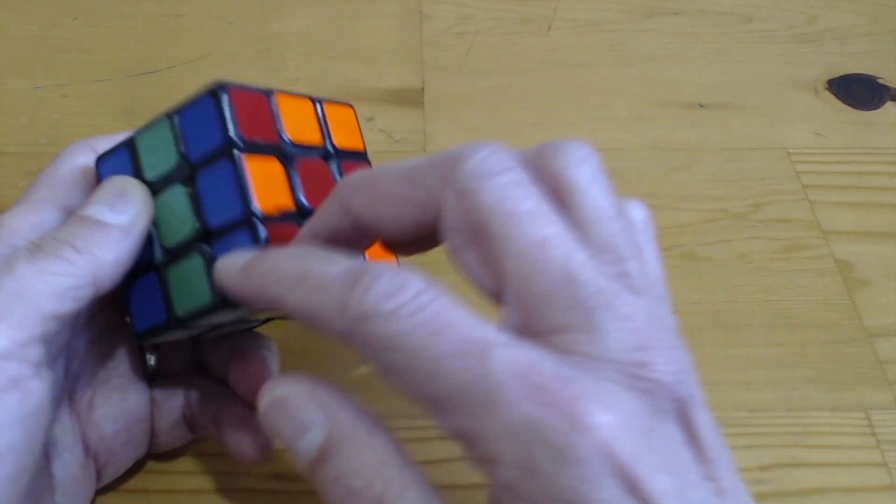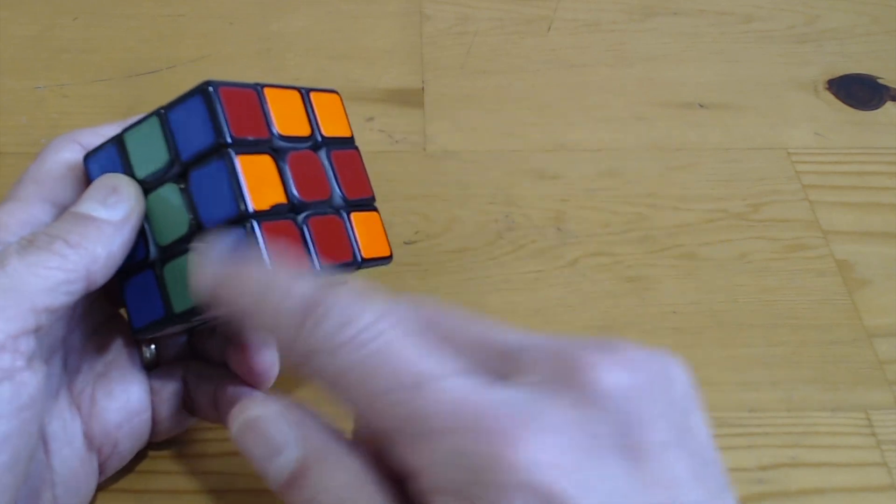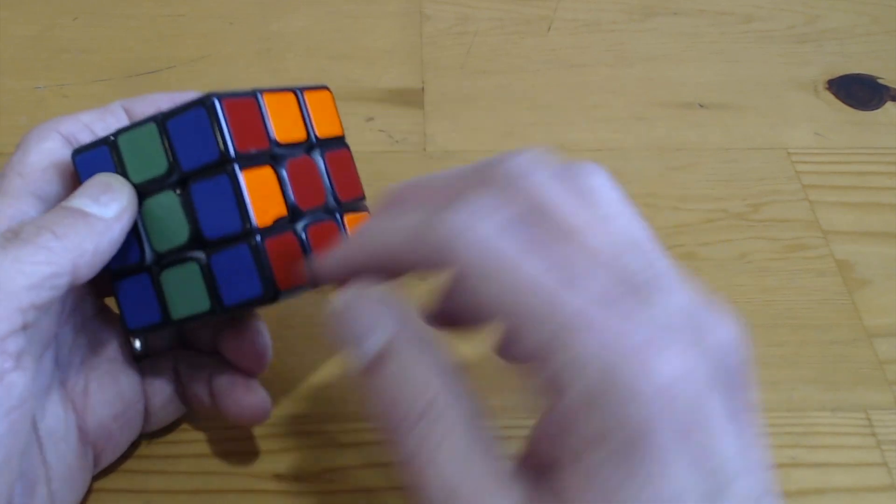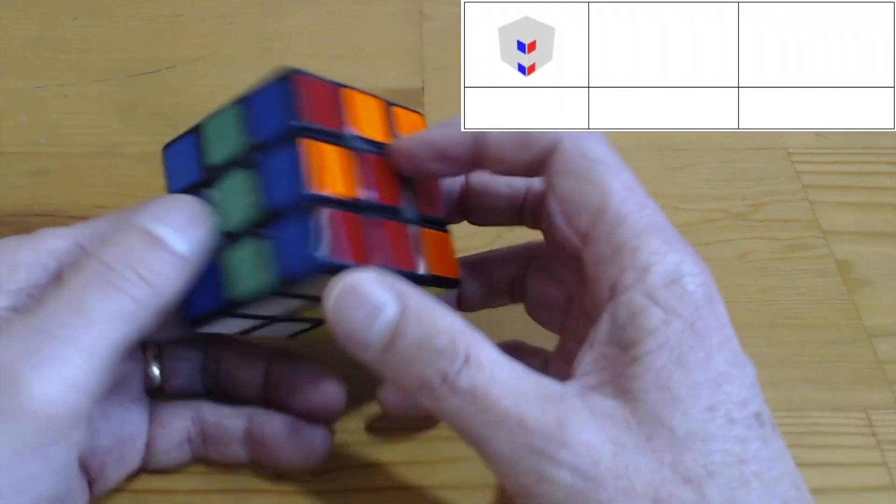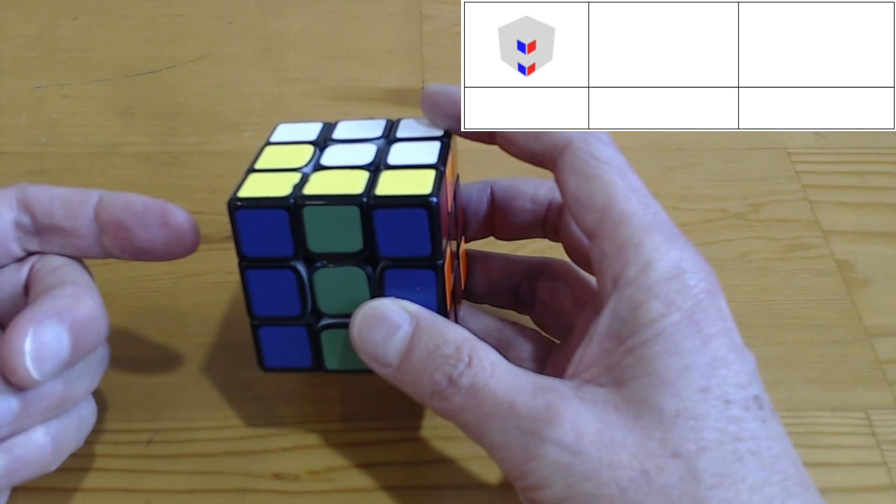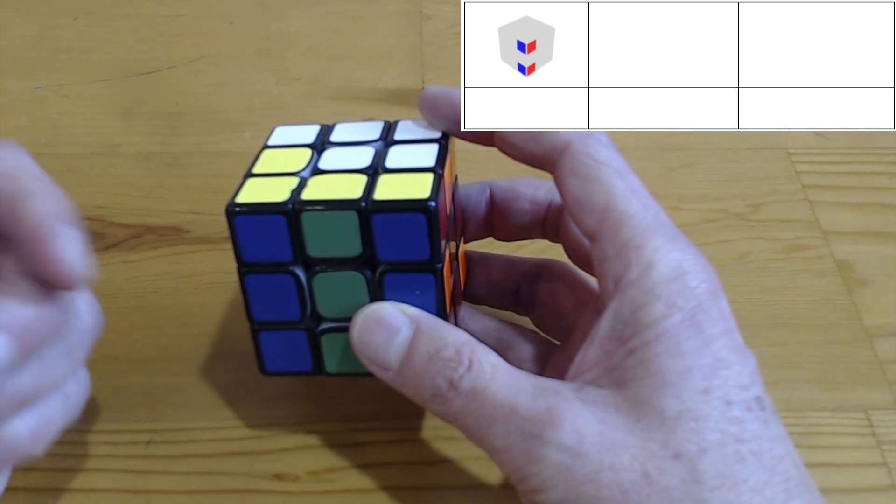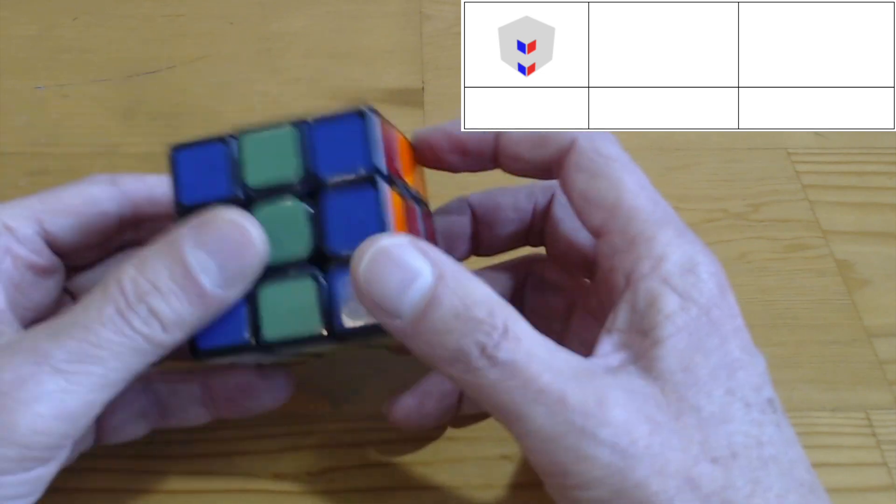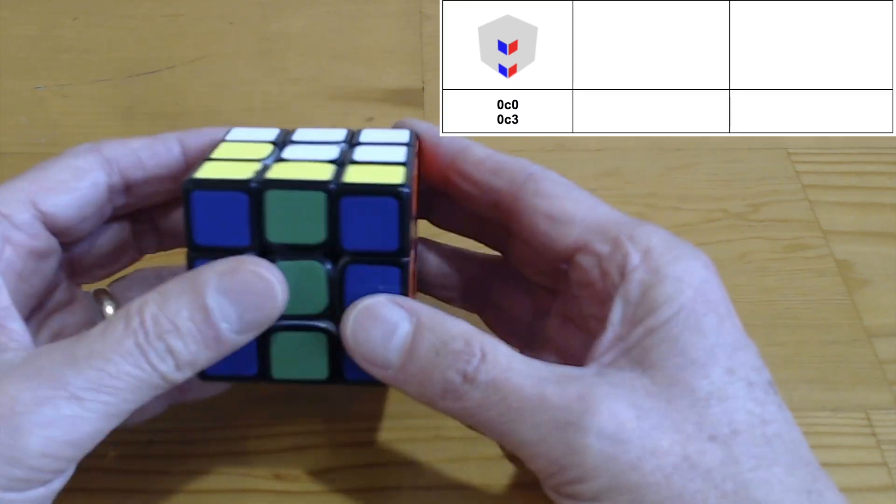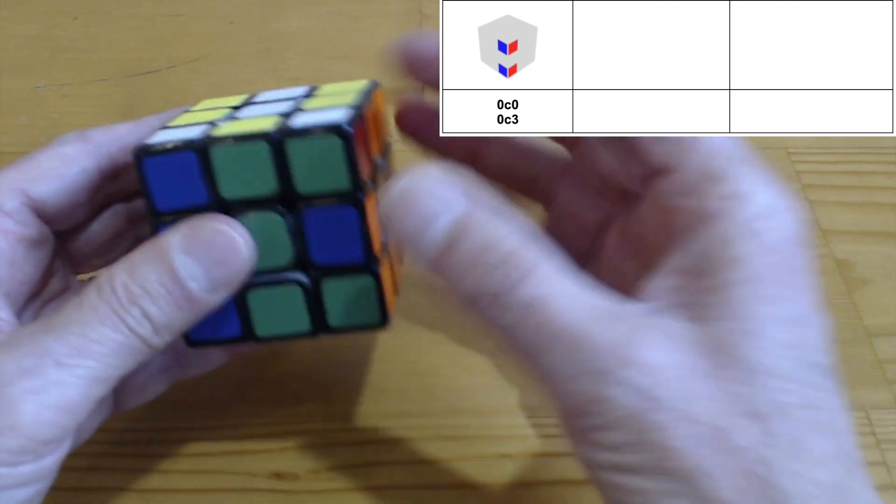So we're always looking at a corner and its partner, which is the other corner with the same side pairs. So here's blue-red, blue-red. So this case is zero bad corners. All the corners are in floppy reduction. So if my parity is even, then I need zero moves. So that would be 0C0, and if parity is odd, then it's a 0C3.